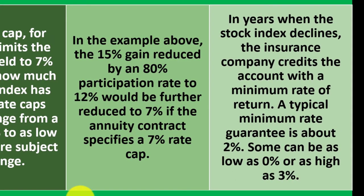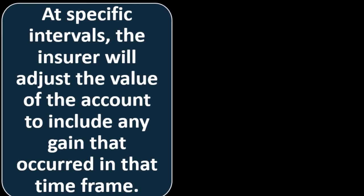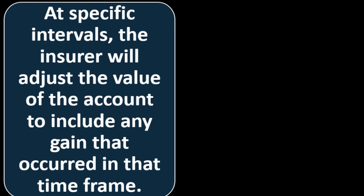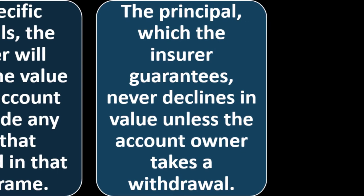In years when the stock index declines, the insurance company credits the account with a minimum rate of return. A typical minimum guarantee is about 2 percent, though some can be as low as 0 percent or as high as 3 percent, adjusted at specific intervals. The insurer will adjust the value of the account to include any gain that occurred in that time frame. The principal, which the insurer guarantees, never declines in value unless the account owner takes a withdrawal.